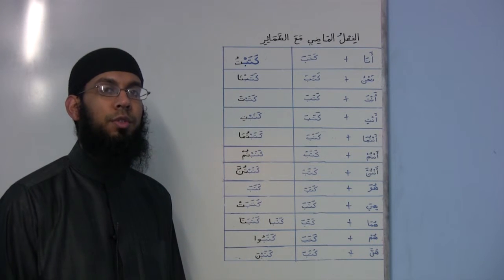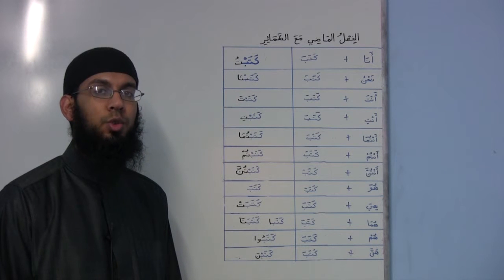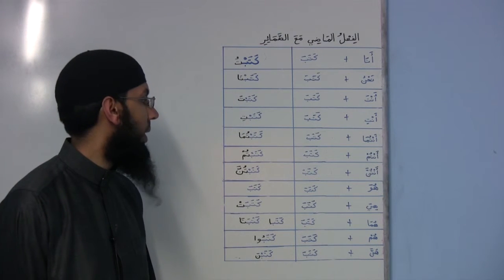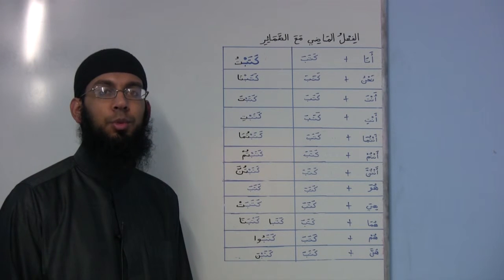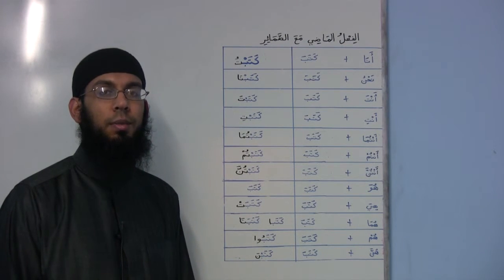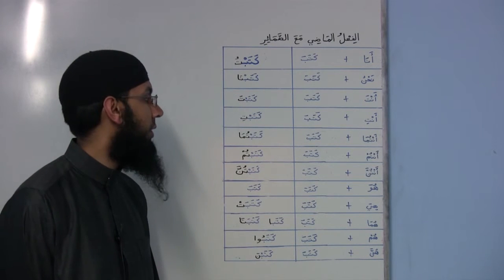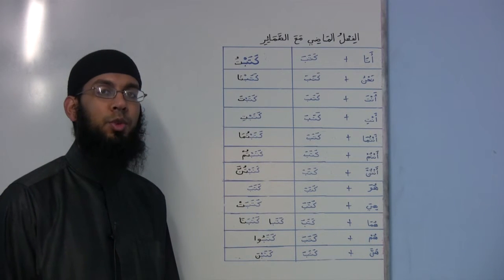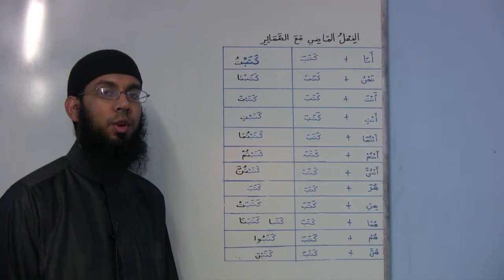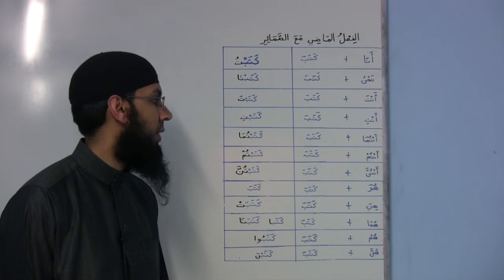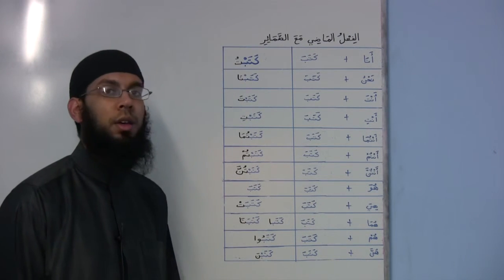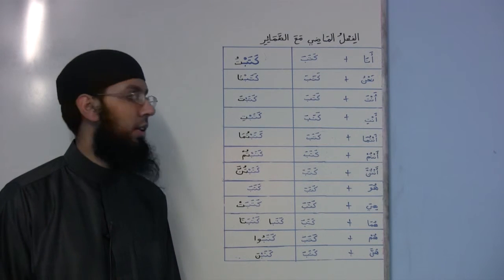Katabtum — 'you lot wrote,' referring to a group of males. As we mentioned previously, if there is a group of females and one male amongst them, we still use the entum form, so katabtum. Entunna plus kataba: katabtunna — 'you lot wrote,' for a group of females.